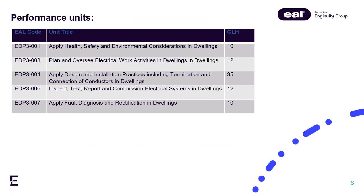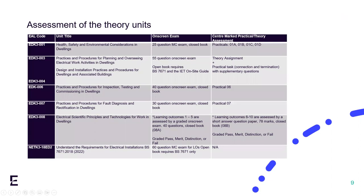I'm going to give a quick overview of the performance units in that they reflect the content in the theory units, but obviously relate to the application and knowledge and understanding of skills on site. One key difference to the current electrotechnical qualification is that there are no optional units for installation or maintenance — all learners will complete the same performance units. This slide covers the assessments of the theory units and gives an overview of what I've already mentioned.